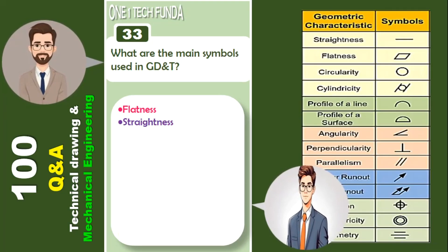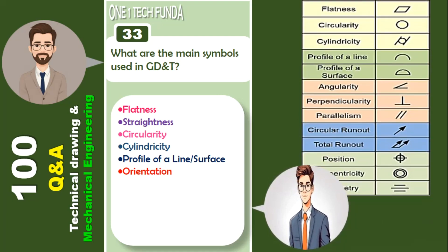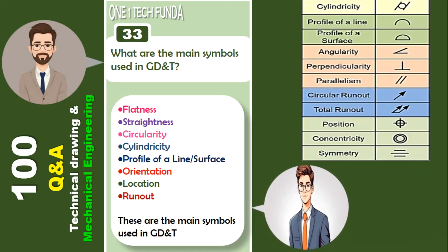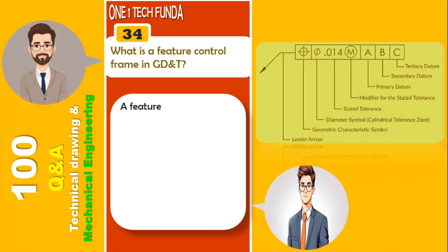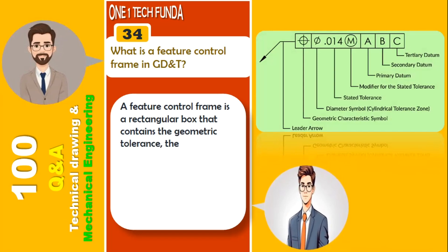What are the main symbols used in GD&T? Flatness, straightness, circularity, cylindricity, profile of a line/surface, orientation, location, and runout are the main symbols used in GD&T. A feature control frame is a rectangular box that contains the geometric tolerance, the symbol, and any necessary reference datums. It specifies the type of tolerance and its associated limits.